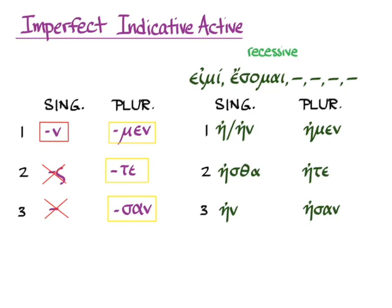The accent here is good old recessive, and so that turns into circumflexes on all of these little bitty forms. And the meaning is: ἦν (I was), or ἦ, ἦσθα (you were), ἦν (she was, or he was, or it was), ἦμεν (we were), ἦτε (y'all were), and ἦσαν (they were).